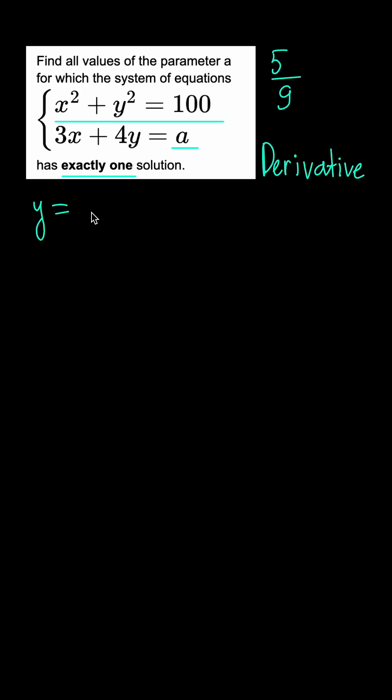The first equation can be solved for y, giving us two functions which look like this. And from the second equation y equals minus 3 over 4x plus a over 4.